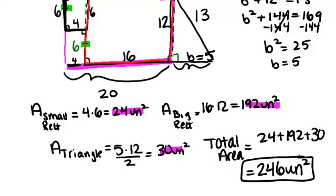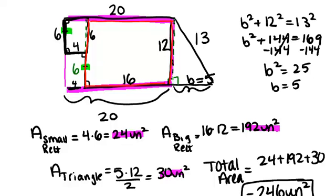So again, the basic idea with composite shapes is break them down into shapes you know. Don't forget your different formulas for rectangles and triangles and parallelograms. Find the area of each part, and then the area of the composite shape would be the sum of all of the other areas.